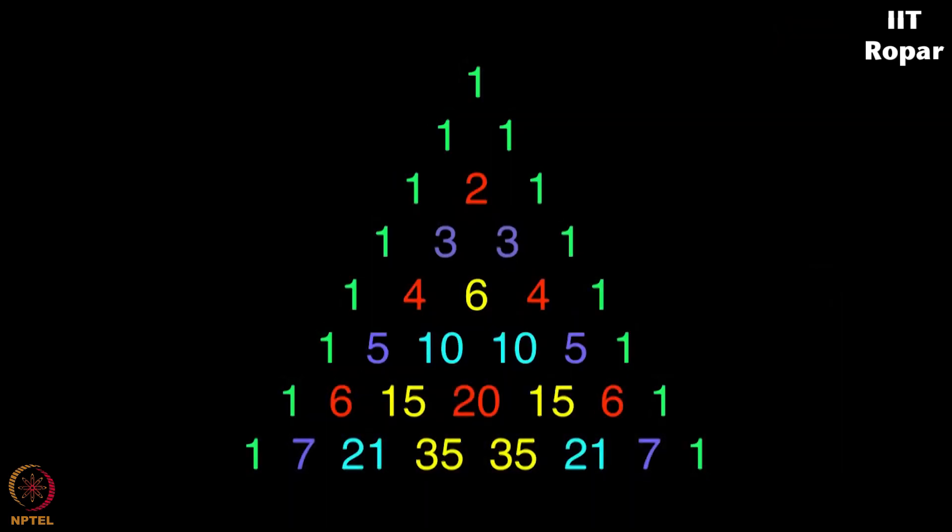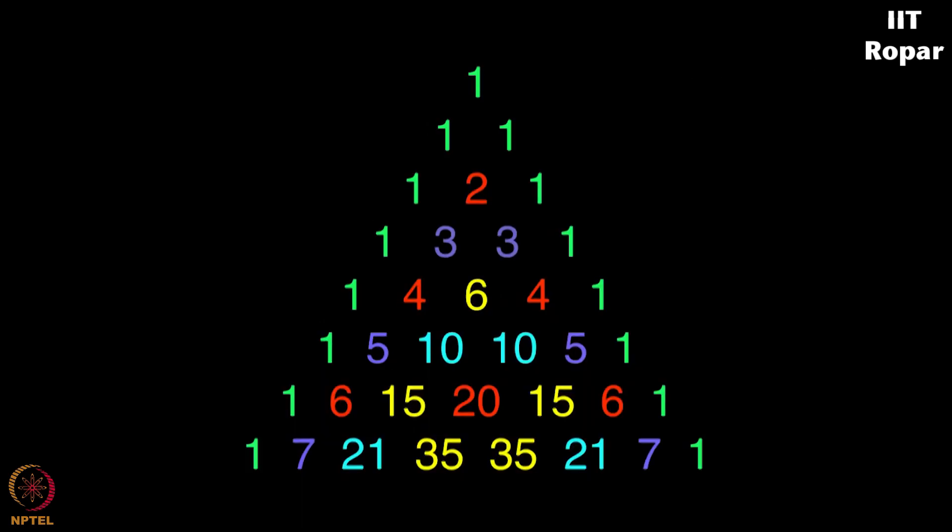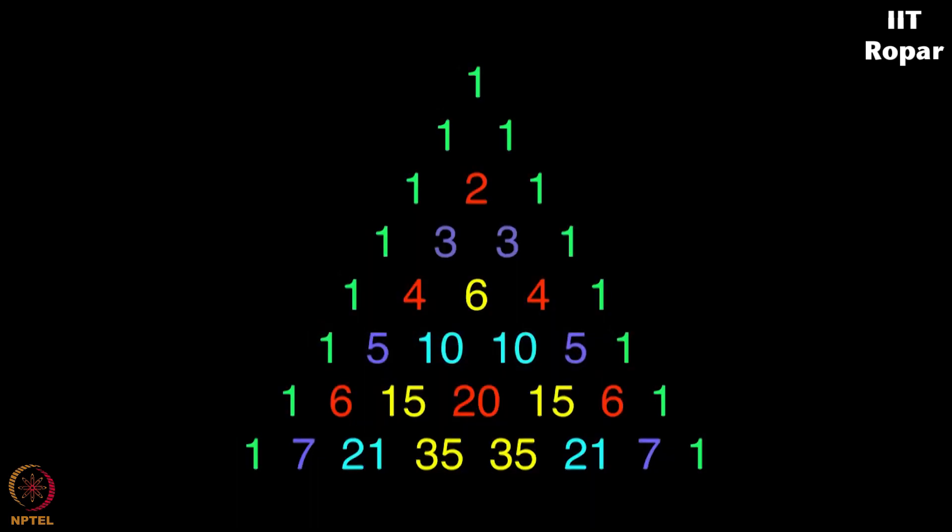As you observe it represents a power of 11 also. Now 1 is 11 to the 0, as you can see the numbers themselves, 1 and 1 is 11 here, 11 to the 1. You can see a 1, 2, 1 here which is 11 square, you can see a 1, 3, 3, 1 here which is 11 cube and so on. Isn't this interesting?